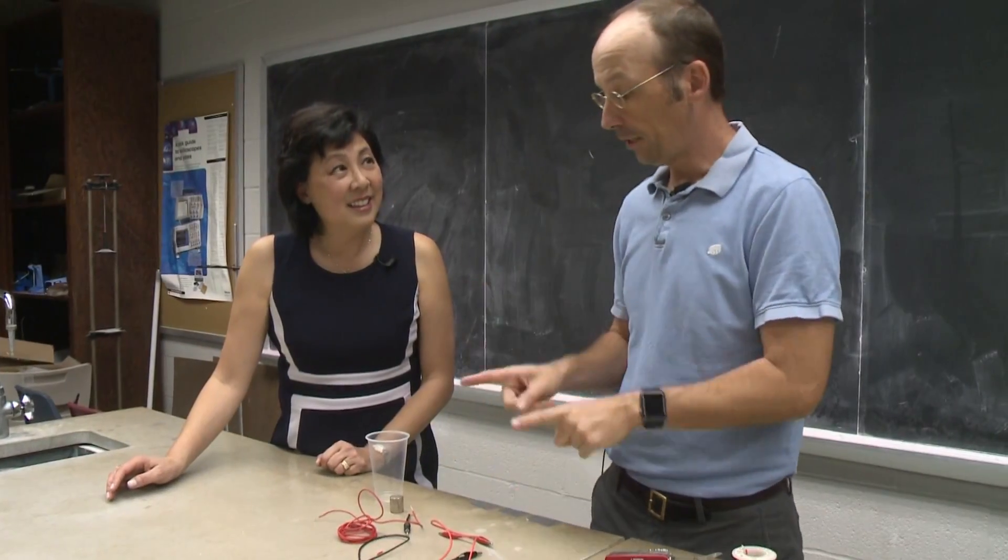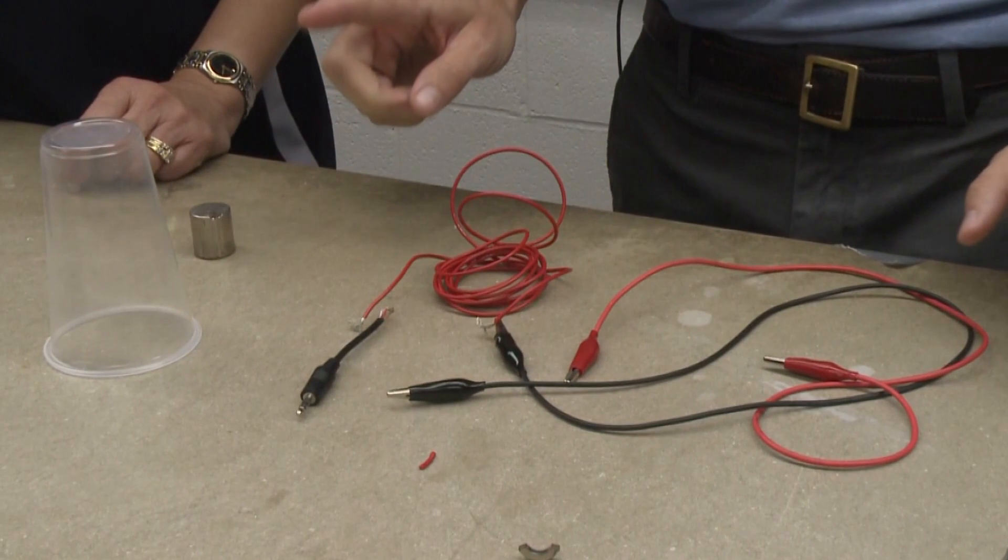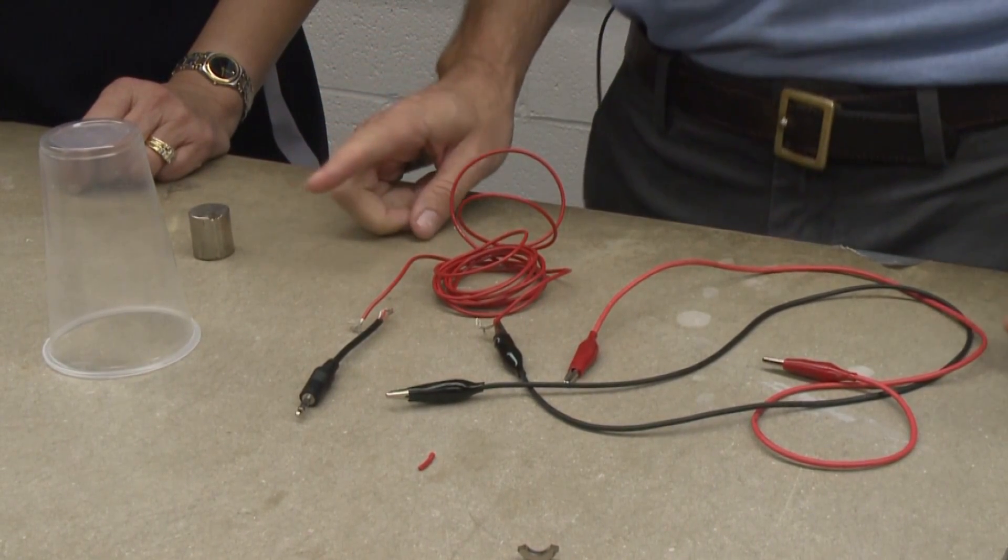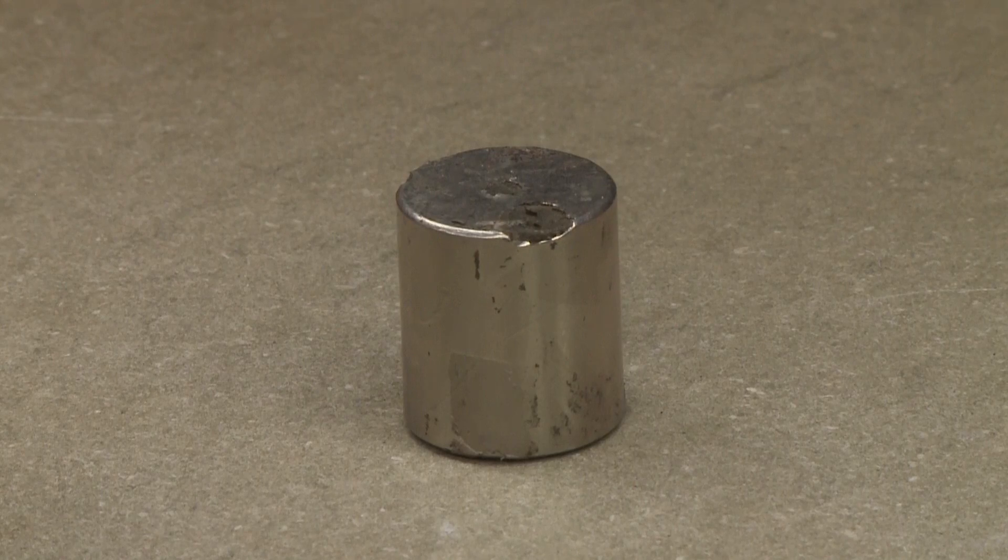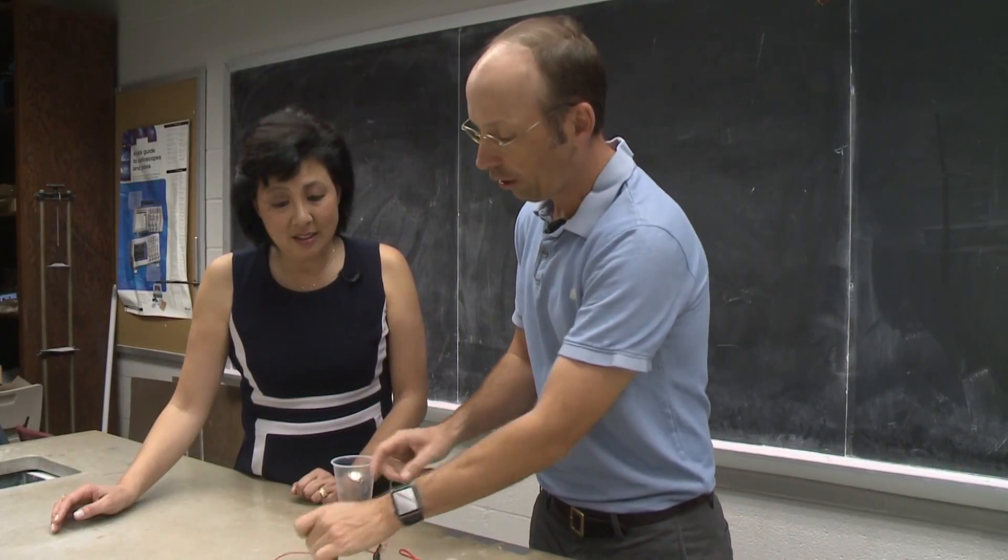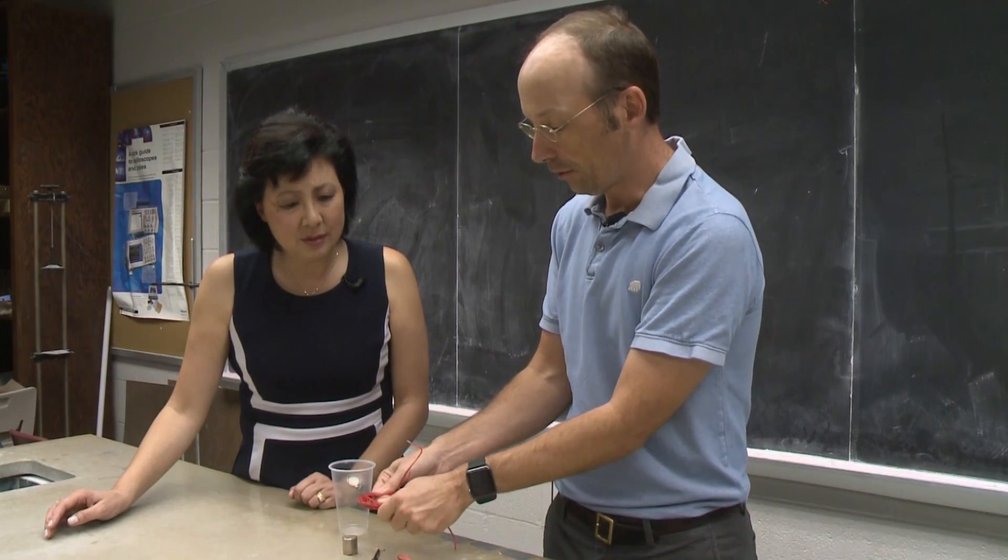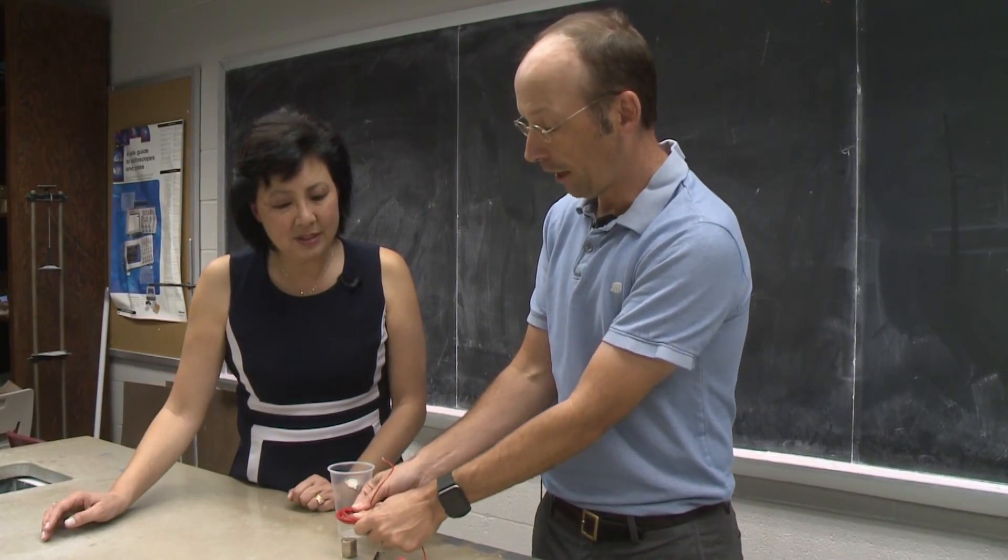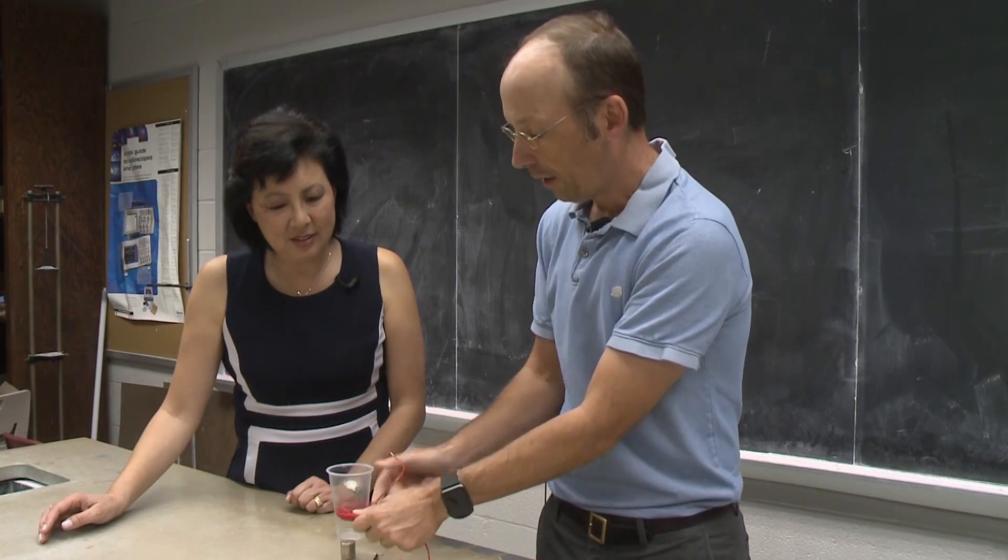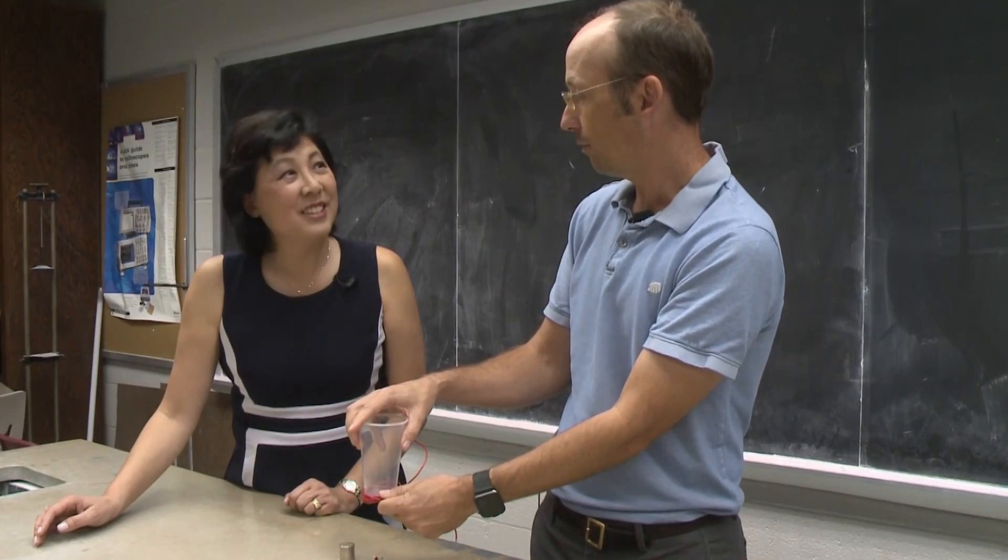So we're going to build a speaker out of just this stuff. Now the only thing that you may have trouble finding is I have a really strong magnet here. But you can use weaker magnets. It just won't be as loud. So the idea is that if we run current through this loop of wire, it makes a magnetic field. And if that magnetic field interacts with the magnet, it will move back and forth. And if I put this on top of it, it'll push the air and make sound.